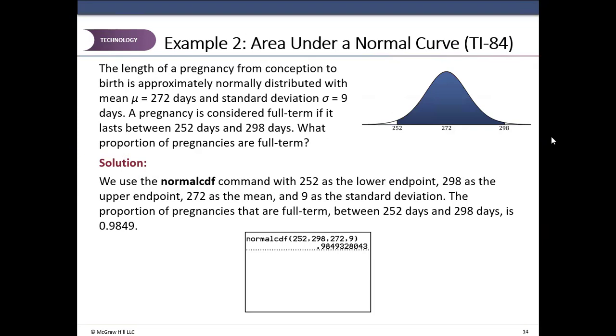The length of pregnancy, the same information. Mean is still 272, standard deviation is 9. It wants to find what proportion of pregnancies will last between 252, the lower boundary, and 298, the upper boundary. So second vars 2. First the lower boundary starts from 252.